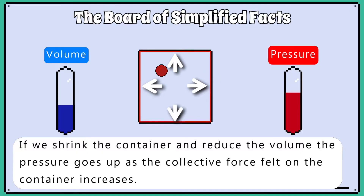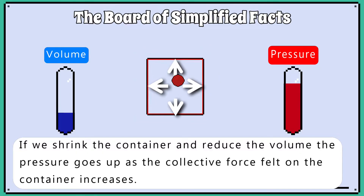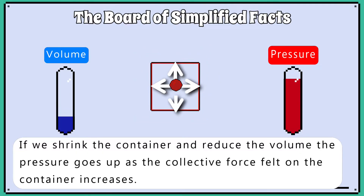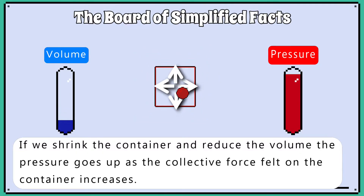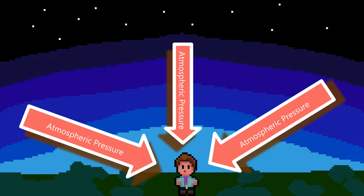If we shrink the container and reduce the volume, the pressure goes up, as the collective force felt on the container increases. The atmosphere is constantly applying pressure on our bodies and, given a chance, the atmosphere will enter our lungs.